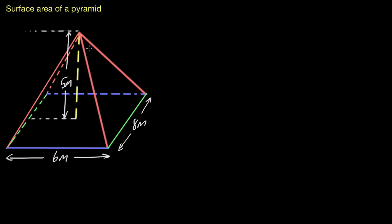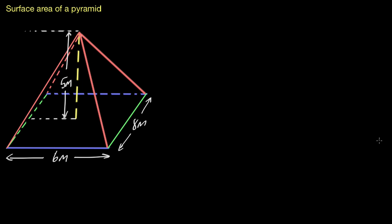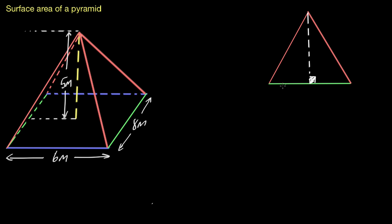Let's start by finding the area of that triangle on the right. I'm going to make a copy of it and place it here. We've got a green line that runs along the base — it's the same green line you can see over here, which is eight meters long. Remember that we're finding the area of each of these faces, so we need the area of this triangle.